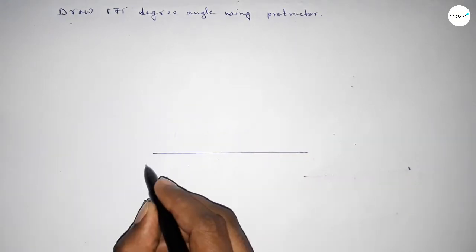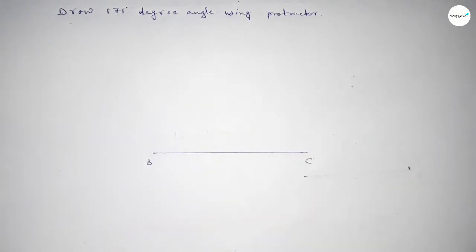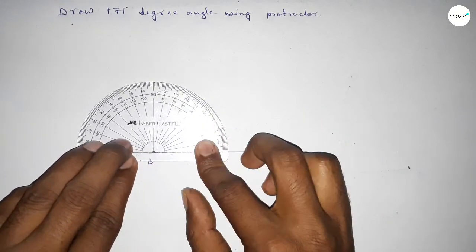So first drawing here a line. Next, taking here point B and here point C. Now putting the protractor on the point B perfectly.